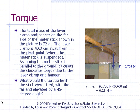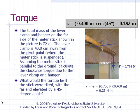What if the stick were tilted so that the far end is elevated by a 45 degree angle? What would be the torque? In this case, the moment arm will be equal to 40 centimeters times cosine of 45 degrees, which is equal to 0.283 meters. And the resulting torque is 0.706 newtons times 0.283 meters, or 0.20 newton meters.